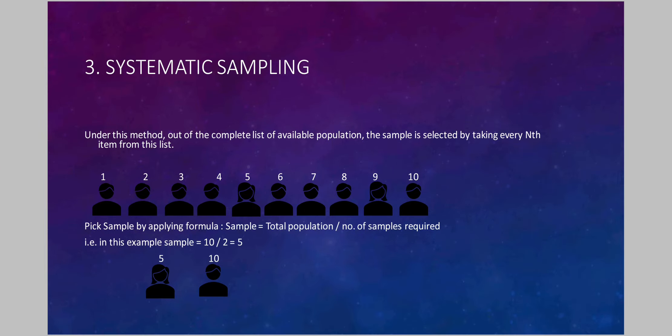The third method is based on calculation and is known as systematic sampling. Under this method, all units of the population are arranged in an order. Then we pick the sample by applying a formula: sample interval equals total population divided by the number of samples required. For example, if there are ten individuals and we require two samples, ten divided by two equals five — so every fifth unit will be selected. As you can see here, the girl at number five and the boy at number ten are the samples.